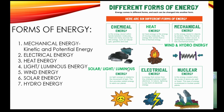We also have solar, light, or luminous energy — all different forms of light energy. Solar energy comes from the sun, while light or luminous energy can come from candles or bulbs. To summarize, the forms of energy we will be learning about are: mechanical energy, kinetic and potential energy, electrical energy, heat energy, light or luminous energy, wind energy, solar energy, and hydro energy.